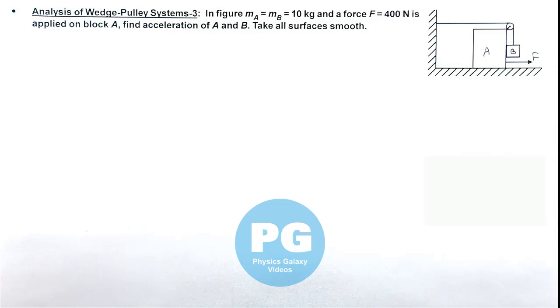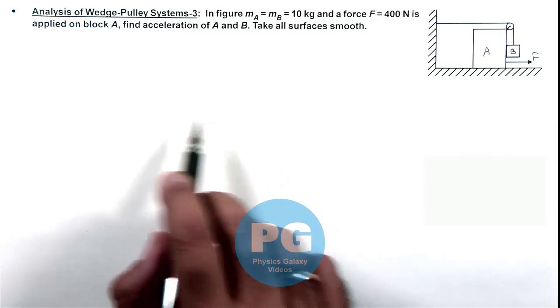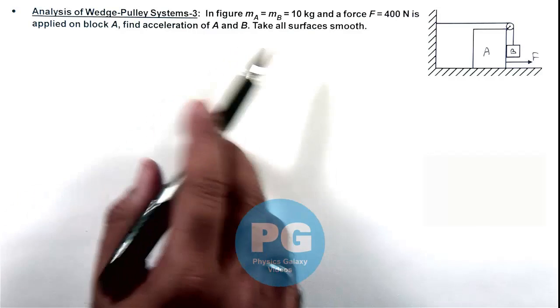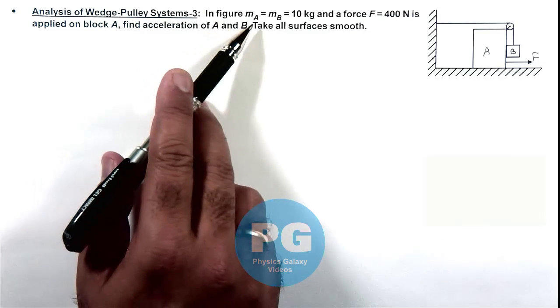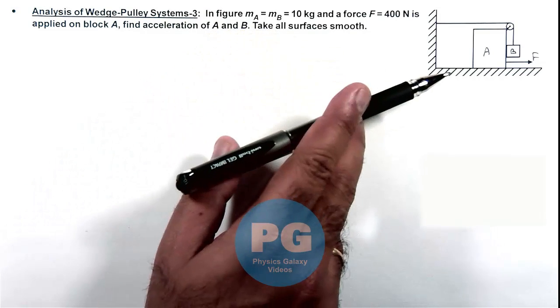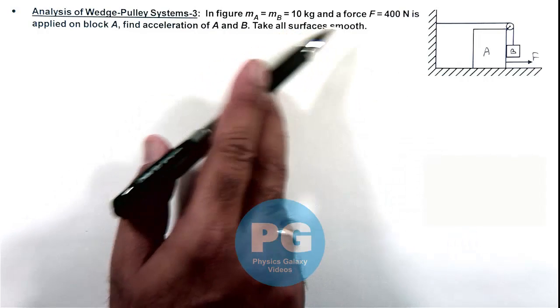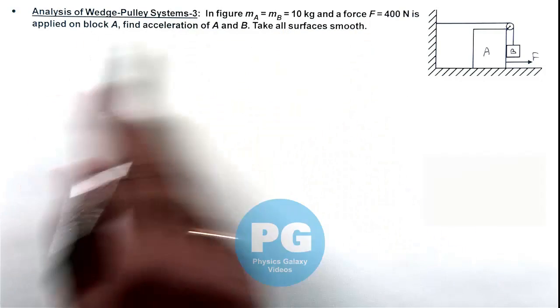In this illustration we'll analyze another case of a wedge pulley system where we are given that in figure, mass A is equal to mass B which are 10 kilogram and the force of 400 newton is applied on block A.